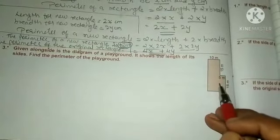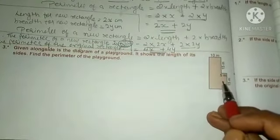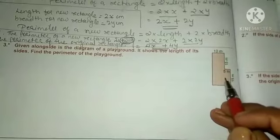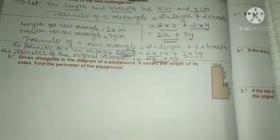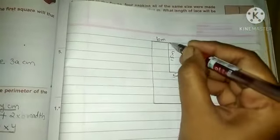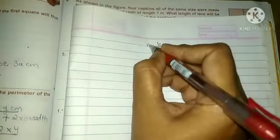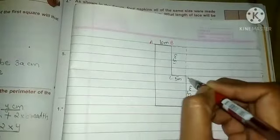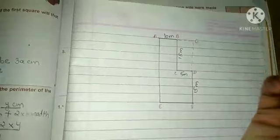The figure is incomplete, so we have to complete it. We extend the figure and label the vertices as A, B, C, D, E, F, and G.